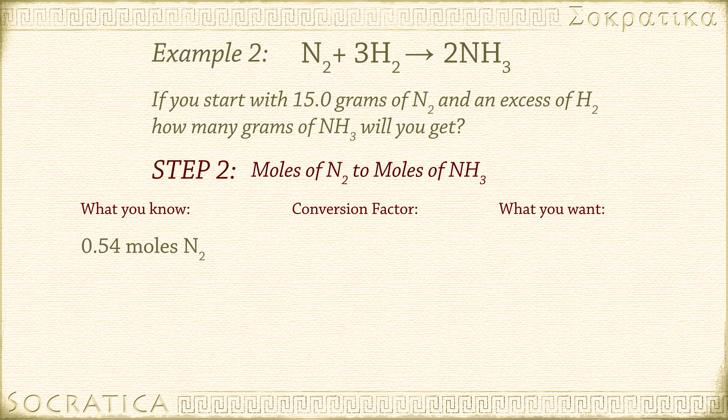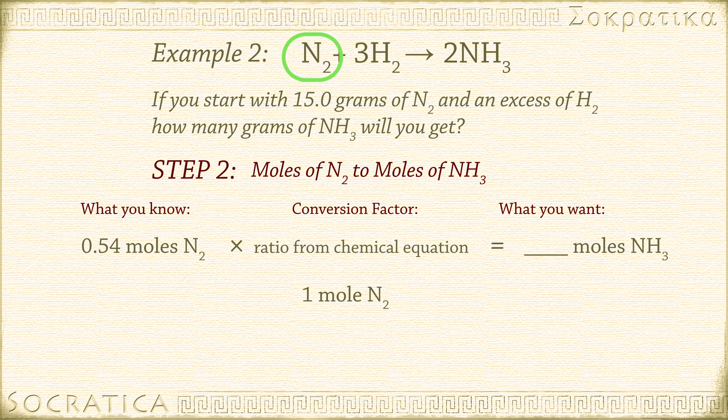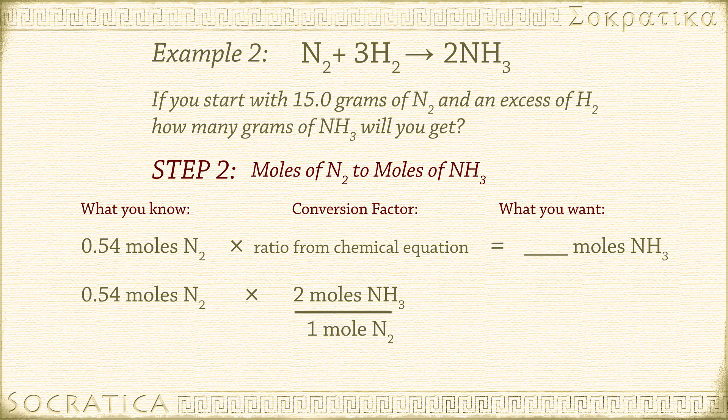0.54 moles of N2 times a conversion factor will give us the number of moles of NH3. The balanced chemical equation tells us for every 1 mole of N2, we get 2 moles of NH3. Remember to put this conversion factor in the right orientation so the units cancel. 0.54 moles of N2 times 2NH3 over 1N2 equals the number of moles of NH3. Moles of N2 cancels. 0.54 times 2 equals 1.08 moles of NH3.